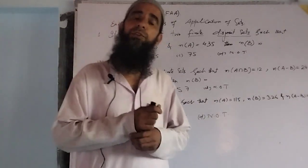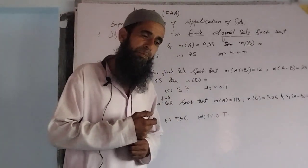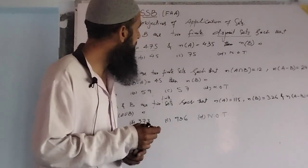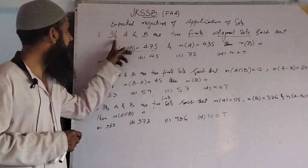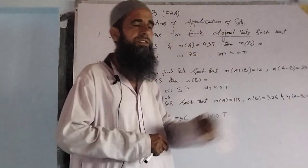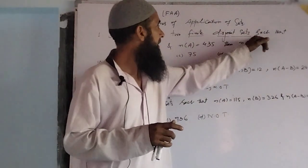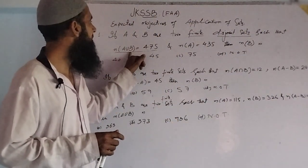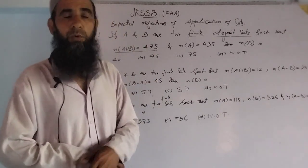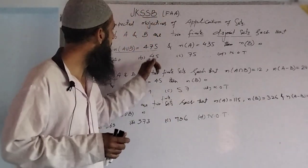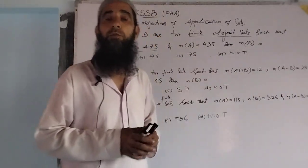Today's first objective which we discuss here: if A and B are two finite disjoint sets, the number of elements in their union, that is n(A∪B), is equal to 475, and the number of elements in A is 435.